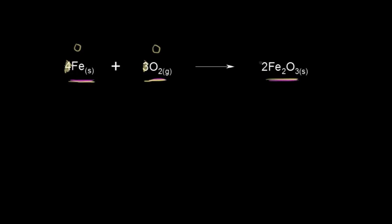Moving over to the product, ignoring the coefficient, oxygen usually has an oxidation state equal to negative two in compounds like this. I put a -2 here and circle it to distinguish it from other numbers. With three oxygens each at -2, that gives a total of -6. For a neutral compound, all oxidation states must sum to zero, so the irons must sum to +6. With two iron atoms, each one must be +3.